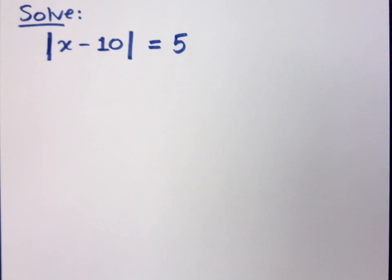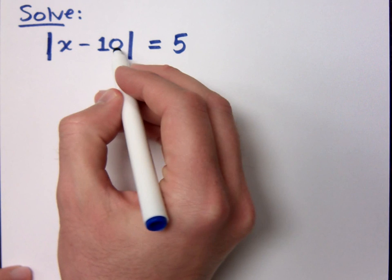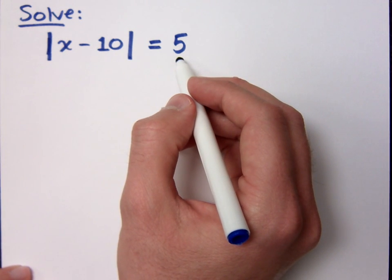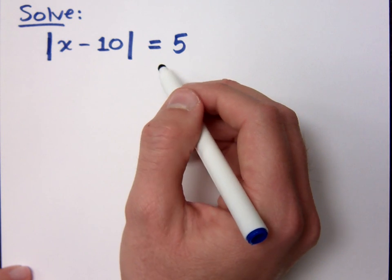So this absolute value equation is a little bit more complicated, but it's not that much complicated. If you think back to the properties that we just wrote, we said that the inside stuff is either going to equal this number or it's going to equal the opposite of that, right?